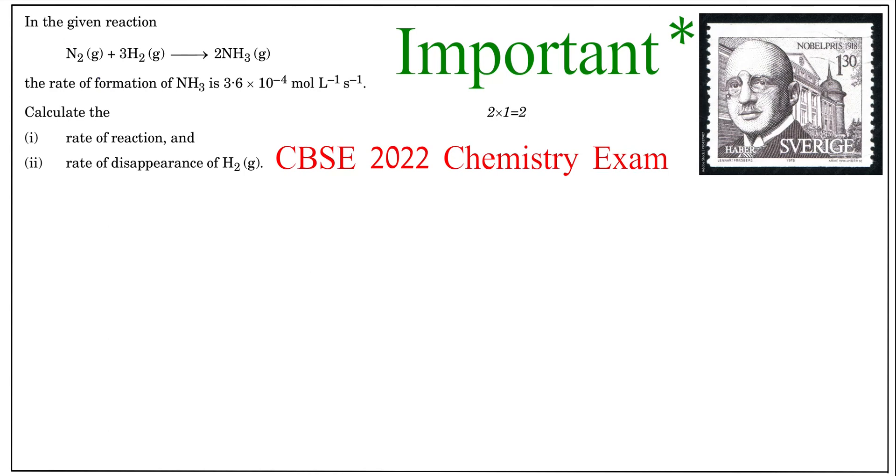Question says in the given reaction N2 gas plus 3H2 gas gives 2NH3 gas. The rate of formation of NH3 is 3.6 into 10 raised to the power minus 4 mole per liter per second. Calculate the rate of reaction and rate of disappearance of hydrogen gas.